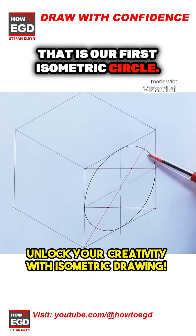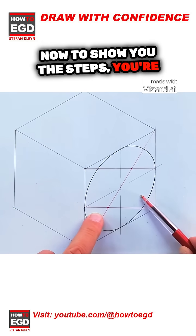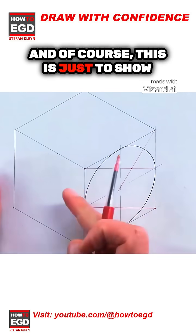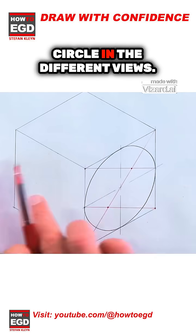That is our first isometric circle. Now to show you the steps, you're going to do the same steps on the opposite corners. And of course, this is just to show you how to draw an isometric circle in the different views.